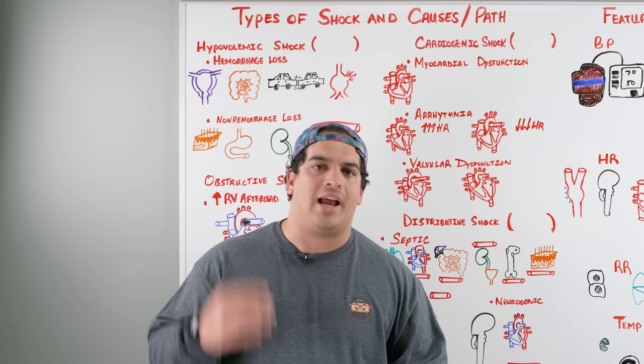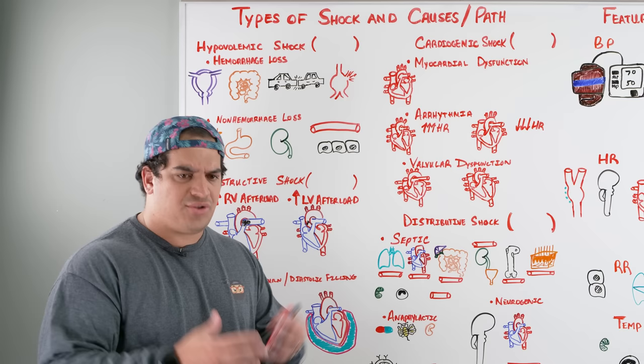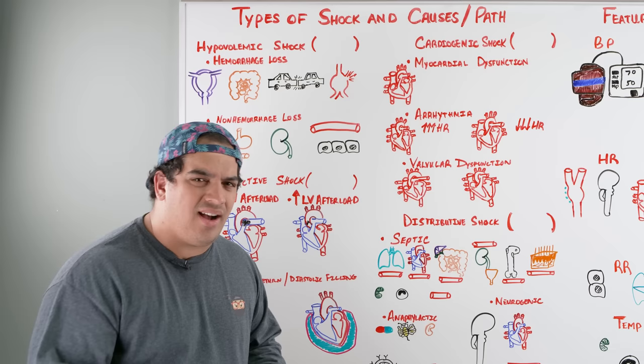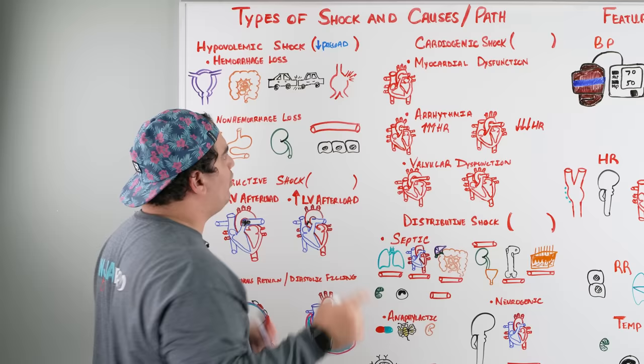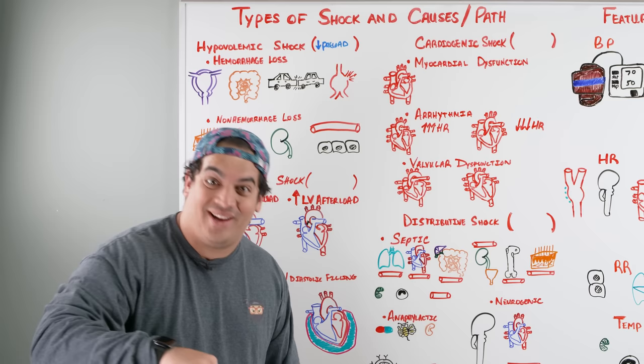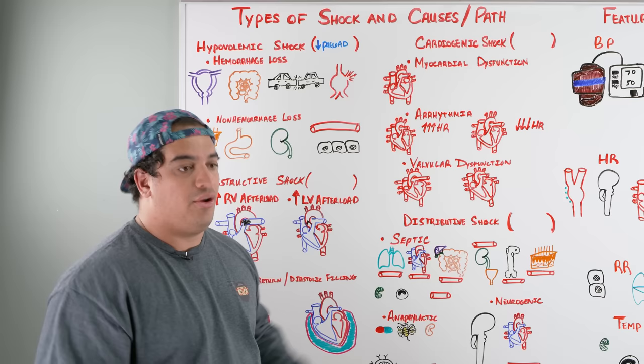There are four types: hypovolemic, cardiogenic, obstructive, and distributive. Hypovolemic shock occurs when you're down on blood volume, which drops your preload. A reduction in preload reduces stroke volume, a reduction in stroke volume reduces cardiac output, and a reduction in cardiac output reduces your mean arterial pressure — that's your actual perfusion pressure.